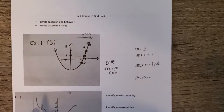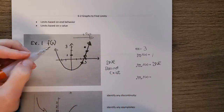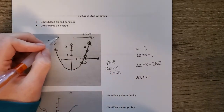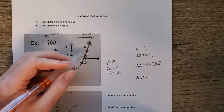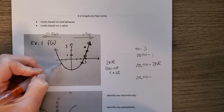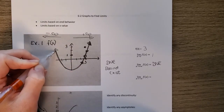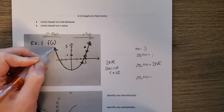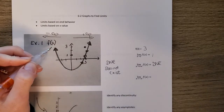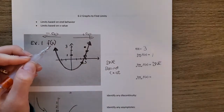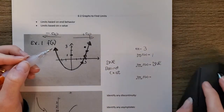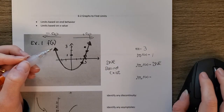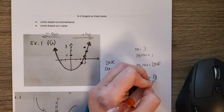For the limit as x approaches negative infinity, we move to the left along the graph. Once again, the graph goes on forever in that direction, so this limit also does not exist — DNE.